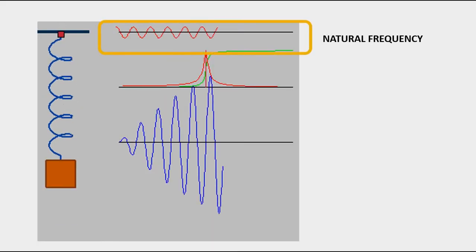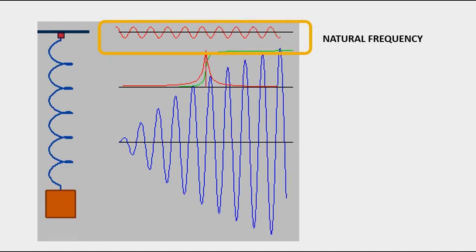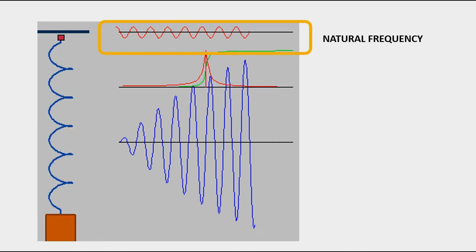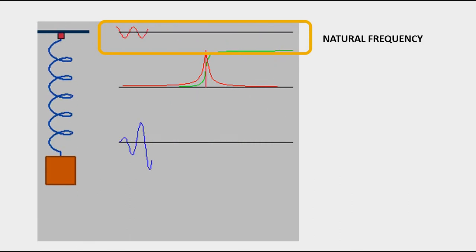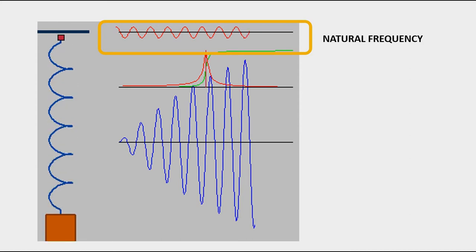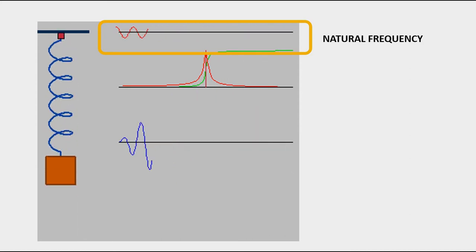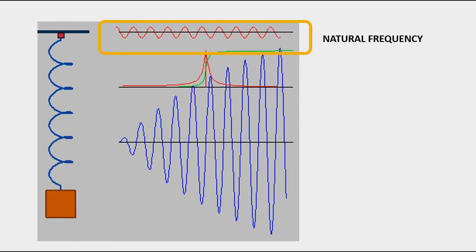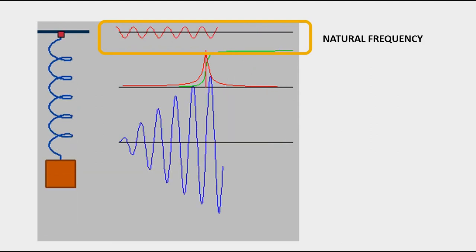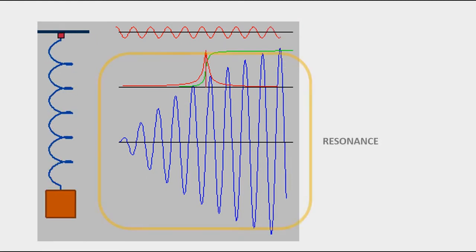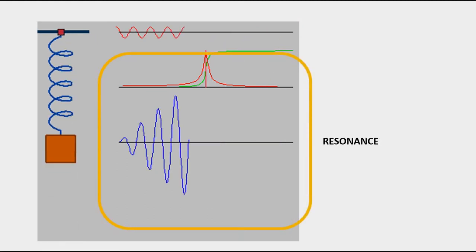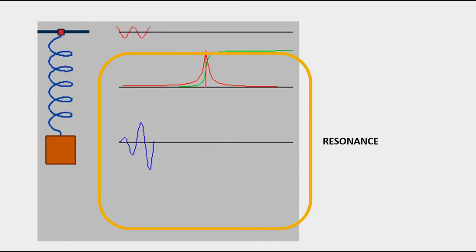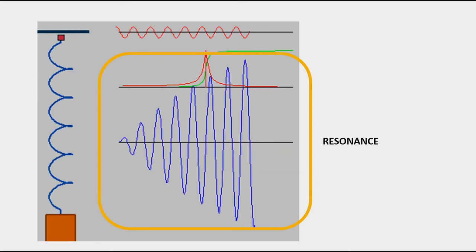Frekuensi natural merupakan frekuensi saat suatu obyek dikenai suatu gaya tanpa dipengaruhi oleh faktor eksternal. Obyek di sini misalnya adalah tanah, batuan, atau bangunan. Pada saat terjadi gempa bumi, frekuensi pergerakan tanah dapat melebihi frekuensi natural. Pada saat inilah terjadi resonansi, atau terjadinya osilasi dengan amplitudo yang lebih tinggi, atau terjadinya kerusakan di permukaan bumi.